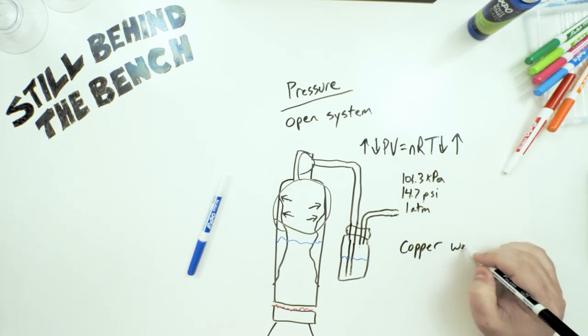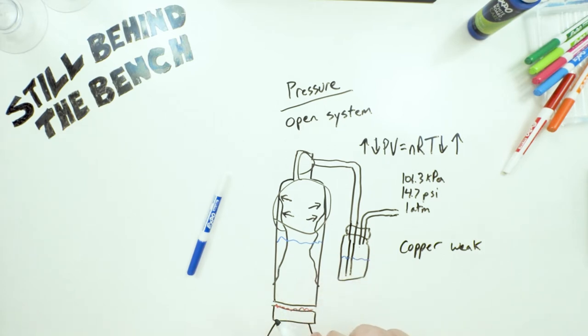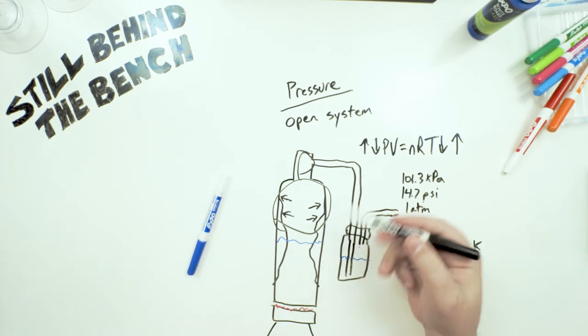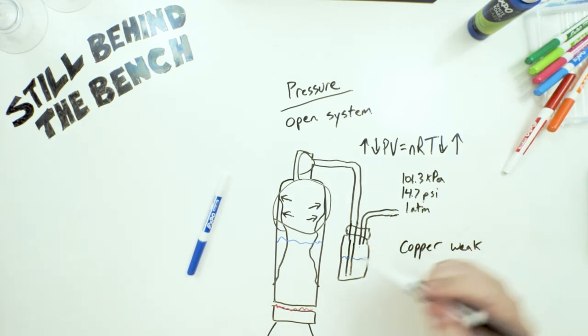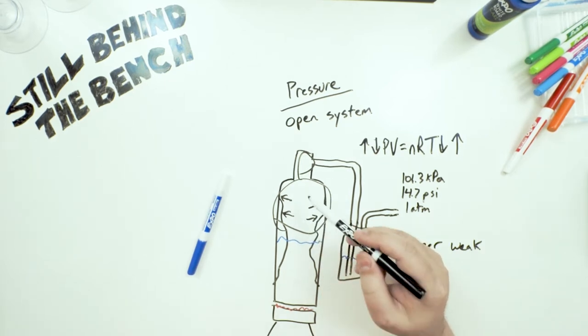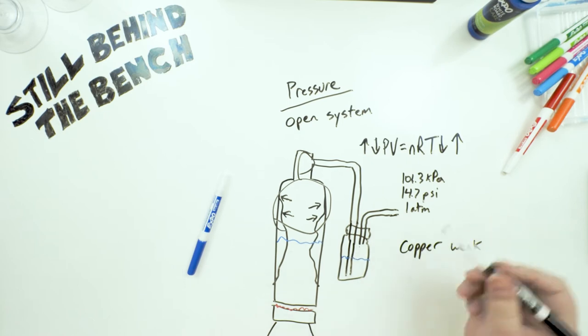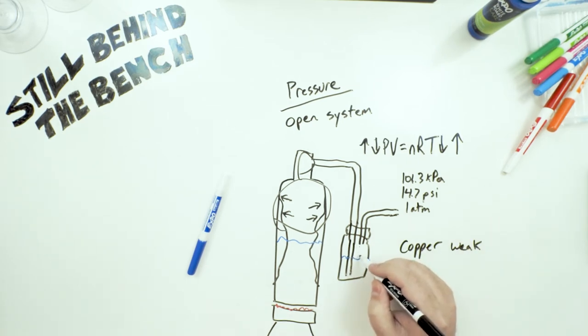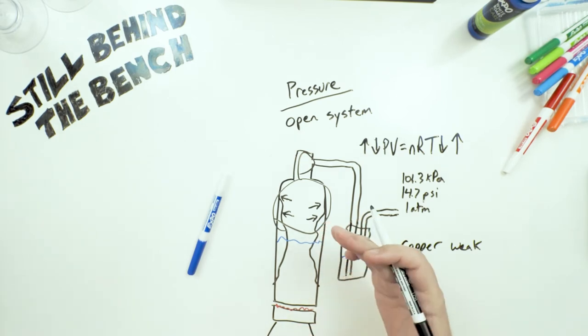So his still was made out of copper, and copper is, based on what or in relation to what else you can use, copper is a weak metal. This is why I suggest always making a stainless steel still and putting copper in there if you need copper for sulfur compounds. You won't have this issue of a vacuum implosion due to a drop in pressure due to a drop in temperature.